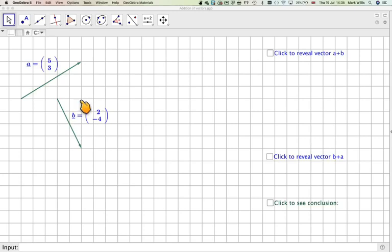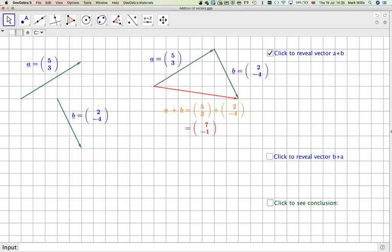So what we're going to do is we're going to add vector A and vector B together. Let's just have a look at that. So that means if we start here, we first do A. So we go 5 along, 3 up, and then we do B, which is 2 along, and 4 down. So we end up here.